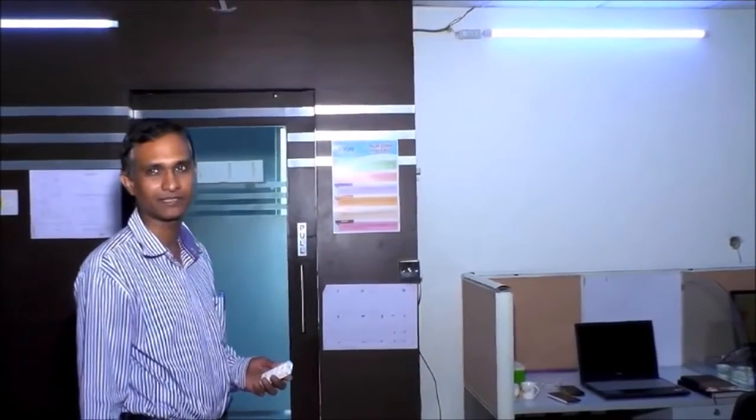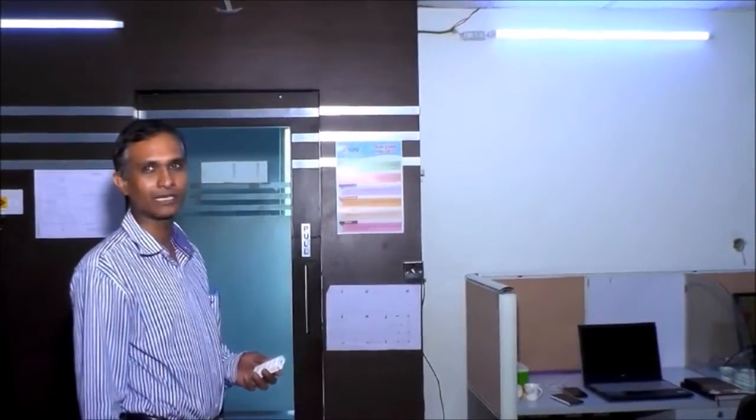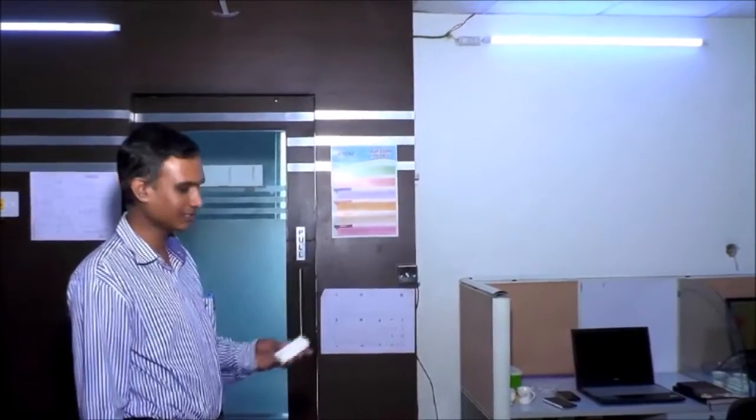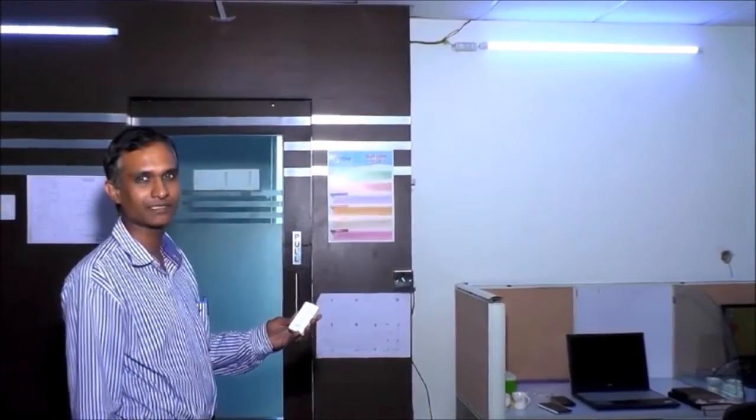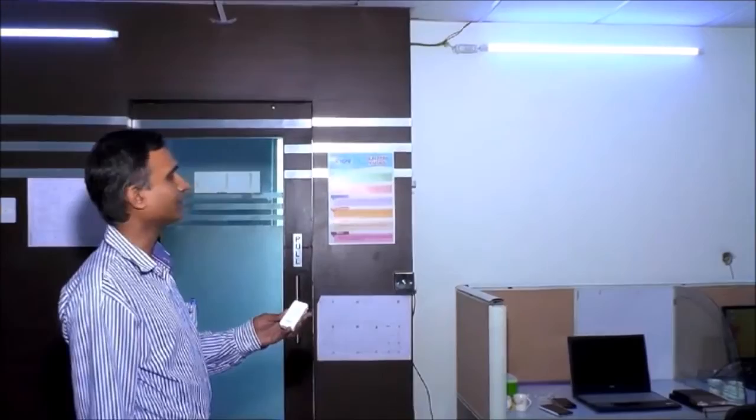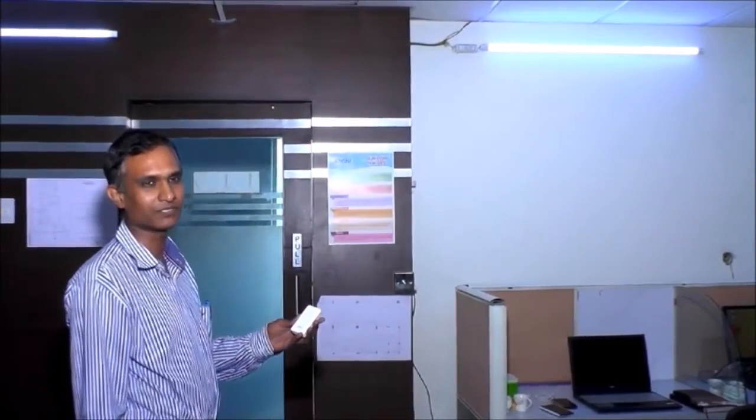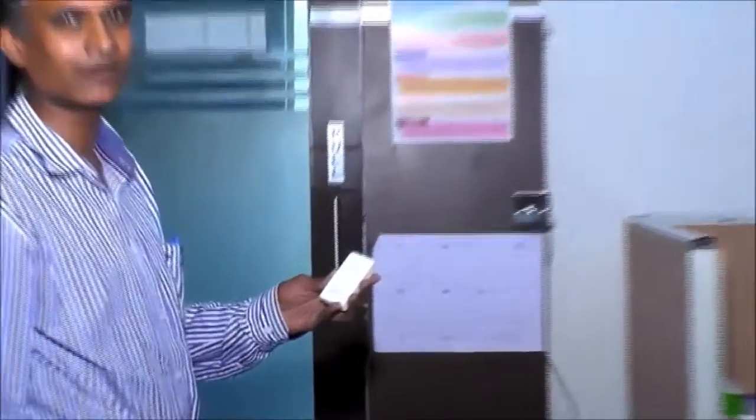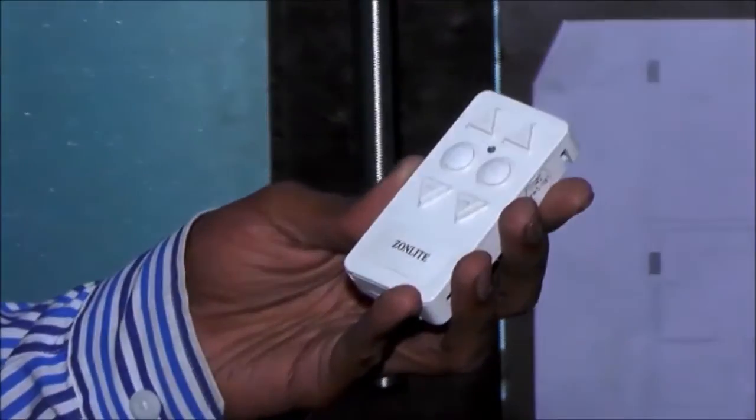we also have the flexibility of convenience in terms of controlling the appliances using a remote. This is a standard remote which comes with the appliances. It can be used to control tube lights and the fan in terms of switching on and off as well as varying the intensity of the light or reducing or increasing the speed of the fan.